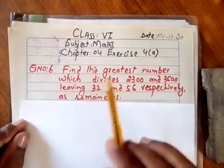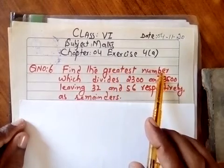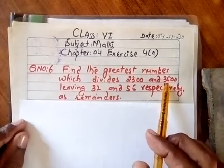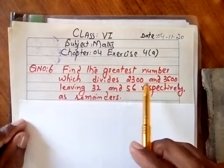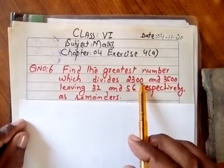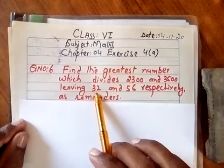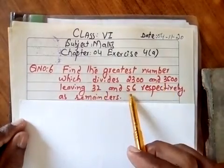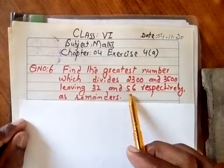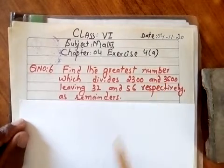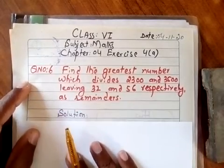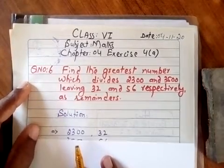The question asks to find the greatest number which divides 2300 with remainder 32, and divides 3500 with remainder 56. We need to find the number that comes in their HCF. The solution is simple.